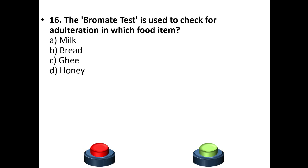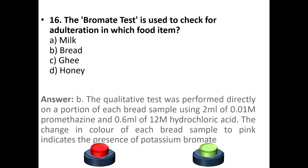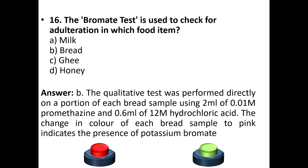Question 16: The Bromide test is used to check for adulteration in which food item? A. Milk, B. Bread, C. Ghee, D. Honey. Your answer is option B: Bread. The qualitative test is performed directly on a portion of each bread sample using 2 ml of 0.01 molar promethazine and 0.6 ml of 12 molar hydrochloric acid. A change in color to pink indicates the presence of potassium bromide.